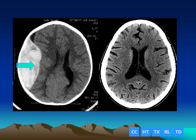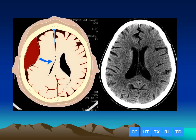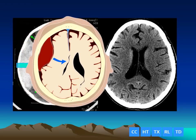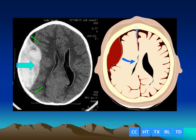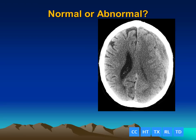Here is another abnormal lesion at the level of the lateral ventricles. We can see a large hyperattenuating extraaxial lesion limited by the coronal and lambdoidal sutures, typical for an epidural hematoma. The ventricles are being compressed and displaced by this extraaxial mass lesion. We have a biconvex extraaxial hematoma consistent with an epidural hematoma.